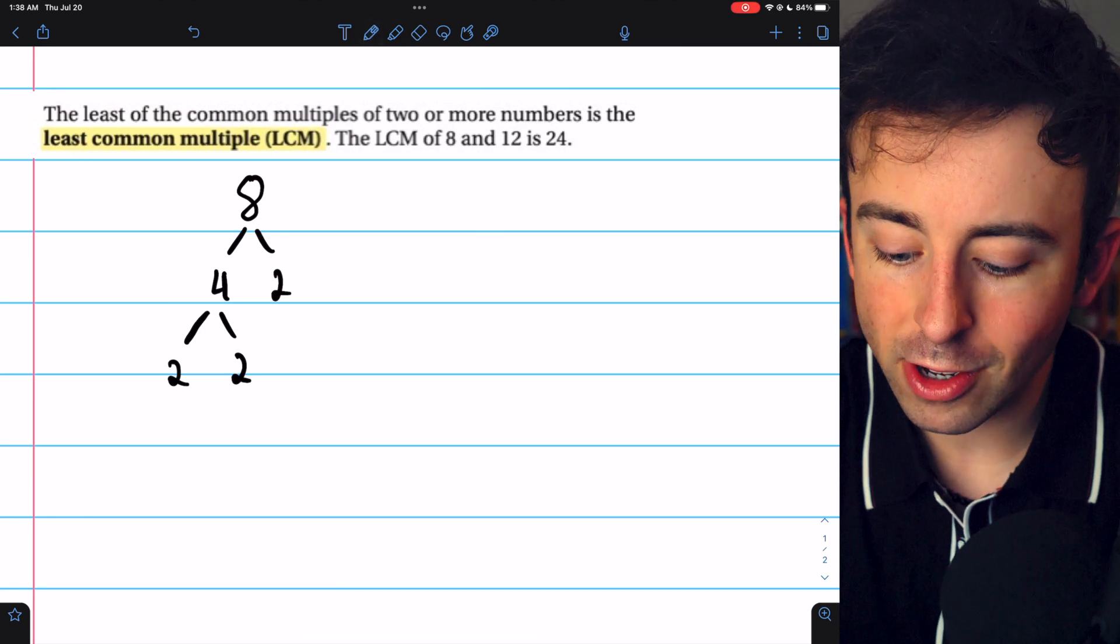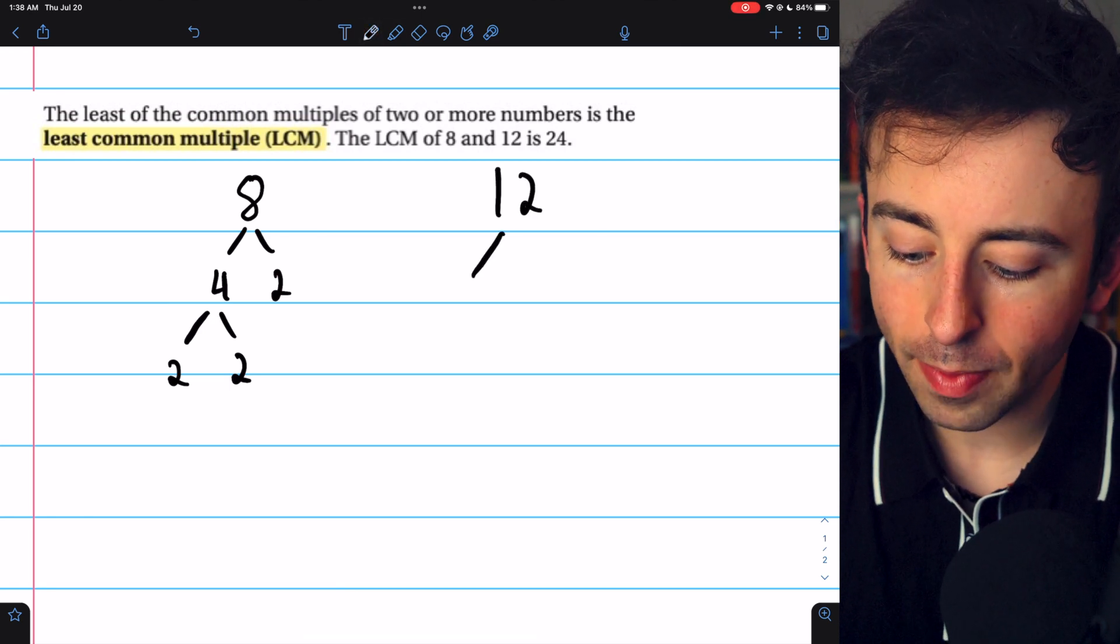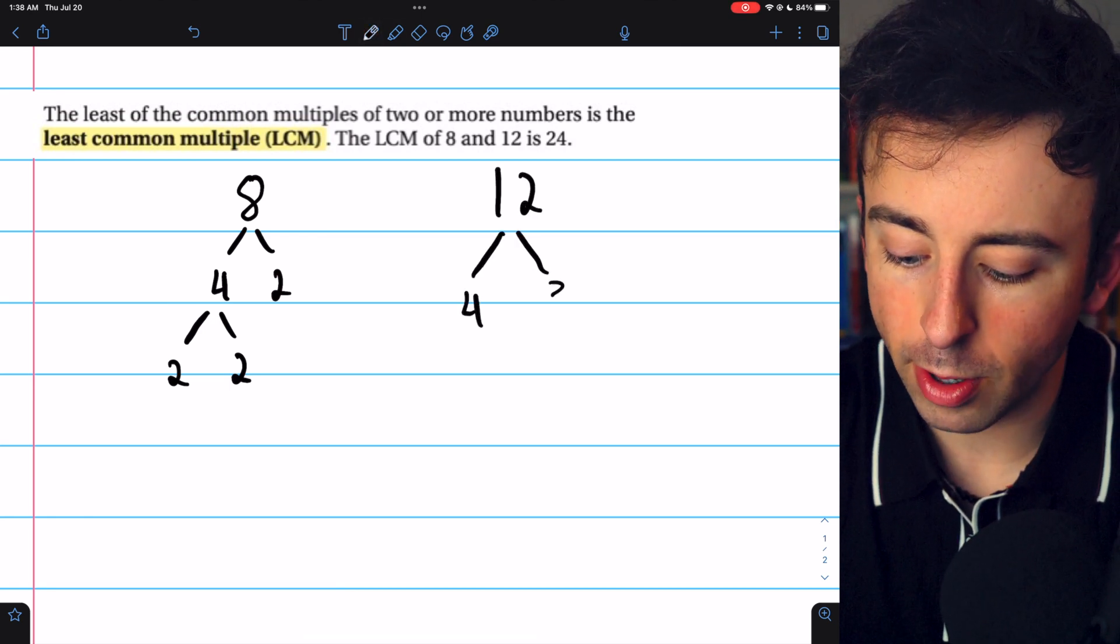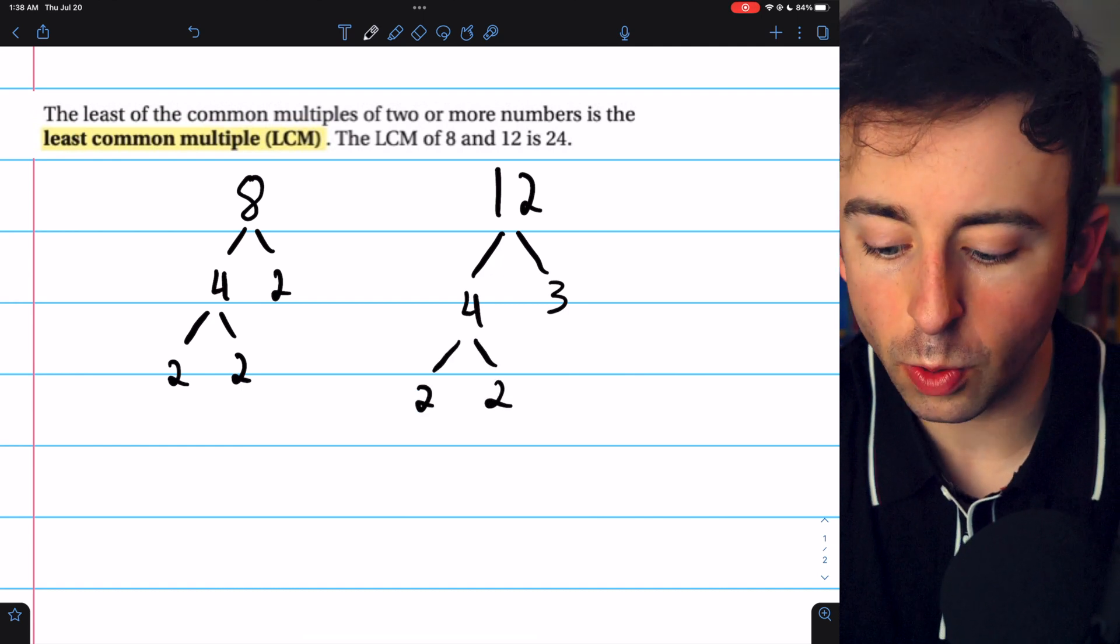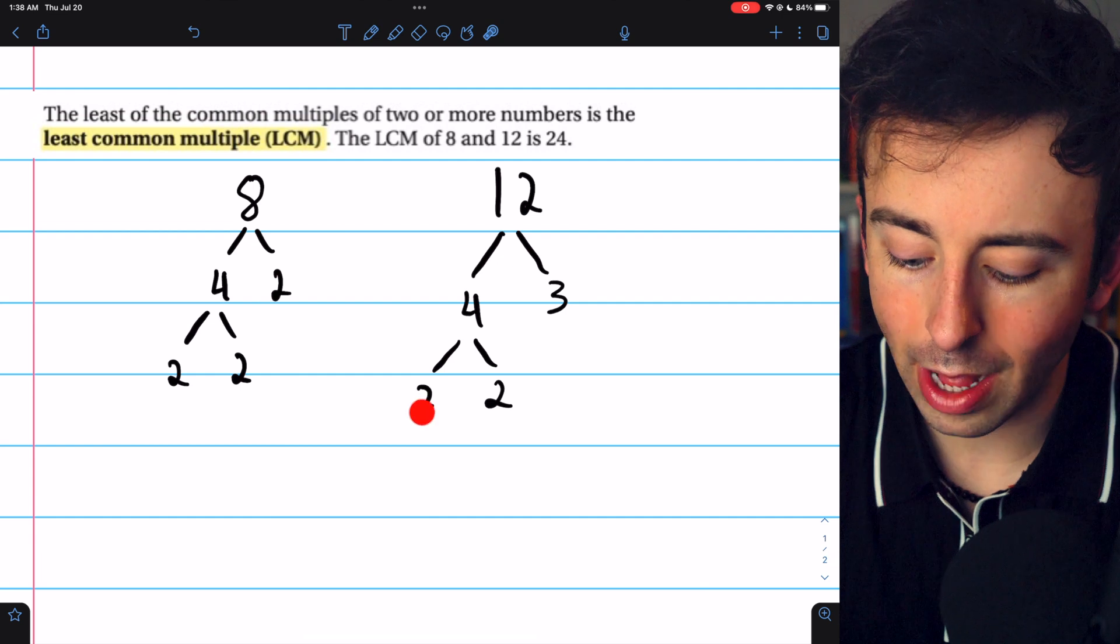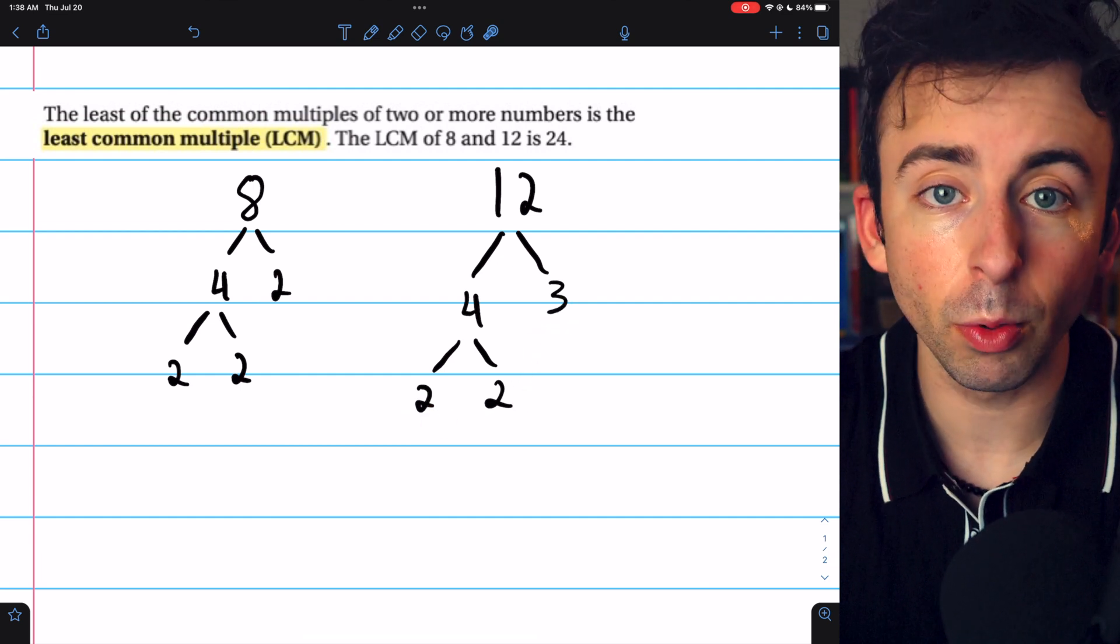That's 8. We can break 12 down in a similar way. 12 is 4 times 3, and 4 can be broken down into 2 times 2. And those are the prime factors of 12: 2 times 2 times 3.